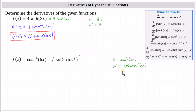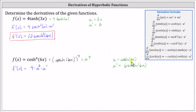If it's helpful, we can now think of the original function as simply u to the fourth, which indicates f prime of x is equal to four times u to the power of three, times u prime. Now we substitute hyperbolic cosine of six x for u, and six hyperbolic sine of six x for u prime.